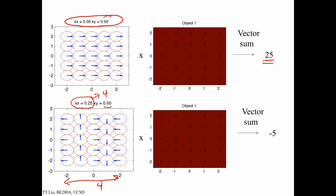When we multiply this all-1s object by the phasor pattern, multiplying by 1 does nothing, so we simply sum up all the arrows. We can do this column by column: the sum of phasors in the first column gives minus 5, the second gives plus 5j, the third gives plus 5, the fourth gives minus 5j, and the fifth gives minus 5. Summing all these column sums together gives a total sum of minus 5.